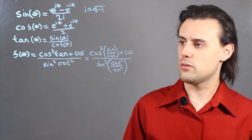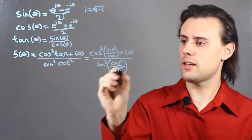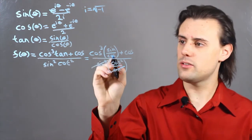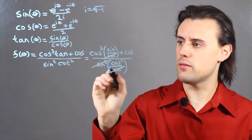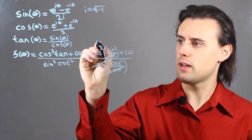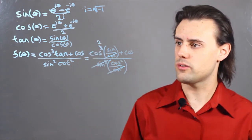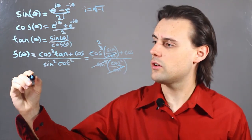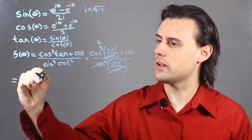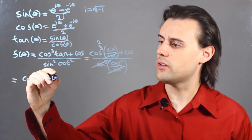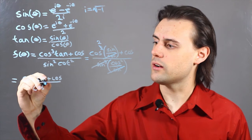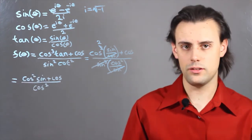Immediately I can see that I can cancel out these sine squared terms. In the numerator, I can cancel out this cosine with one of these cosines, so I have a 2 in the exponent for this cosine. This is equal to cosine squared times sine plus cosine all over cosine squared, and these are all functions of theta.